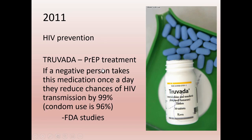Truvada was approved initially for serodiscordant couples — one of the biggest fears someone living with HIV has is giving it to their HIV-negative partners. But it was approved for anyone who thinks they're at risk. During the FDA debates, politicians feared this would generate what they called 'Truvada whores' — people having all the sex they wanted. Since approval, there actually has been increased rates of syphilis and gonorrhea.